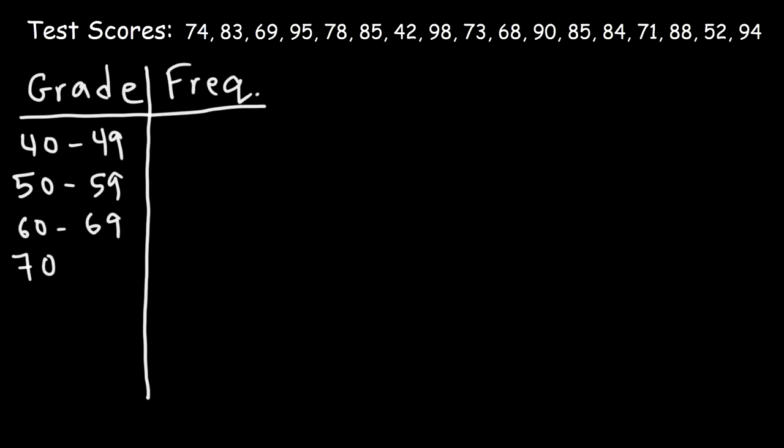So the lowest test score that I see is in the 40s, which is 42. So my lowest range is going to be 40 to 49, and then the next range will be 50 to 59. In the U.S., a score of 60 to 69 usually represents a D, 70 to 79 represents a C, 80 to 89 represents a B, and 90 or above represents an A. Below 60, it's an F. So how many students received a score between 40 and 49? Looking at our data, there's only one score in the 40s, and that's 42. So the frequency for this range is 1.